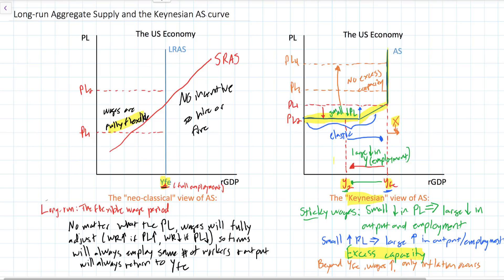As a country approaches its full employment level, you can see that the curve is upward sloping. In this range, there is less excess capacity — fewer workers are unemployed, fewer factories are sitting idle, less land is sitting unused. Therefore, wages, rents, and interest rates will start to rise, causing some inflation as an economy approaches full employment. During a recovery, we would expect almost no inflation as an economy goes from deep recession towards mild recession. But as it approaches full employment, some inflation begins as costs of production rise, resources become scarce, and excess capacity decreases. Beyond full employment, there's no excess capacity, and further attempts to increase output will only be met by higher inflation.